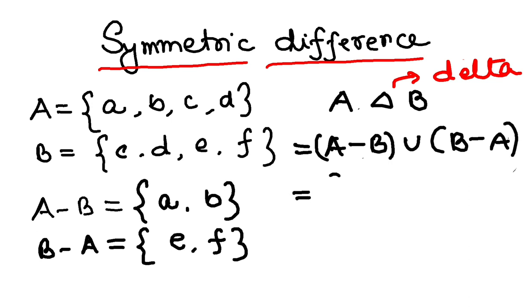So A minus B is {a, b} union B minus A is {e, f}. And we have already discussed what union is: elements either in A or in B.